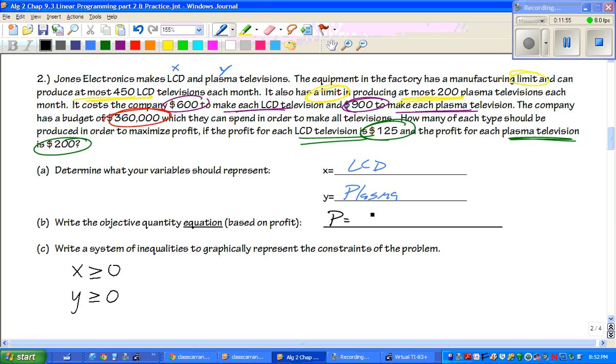So, X and Y, LCD and plasma. The next thing is to write the profit equation. And the profit it's going to tell you, ours is right there, where it's talking about. It specifically says, profit. So, that's 125X plus 200Y. Now, write a list of the inequalities to graphically represent the constraints of the problem. Now, here's the thing. We only gave you these two. But, there are three more in the problem.